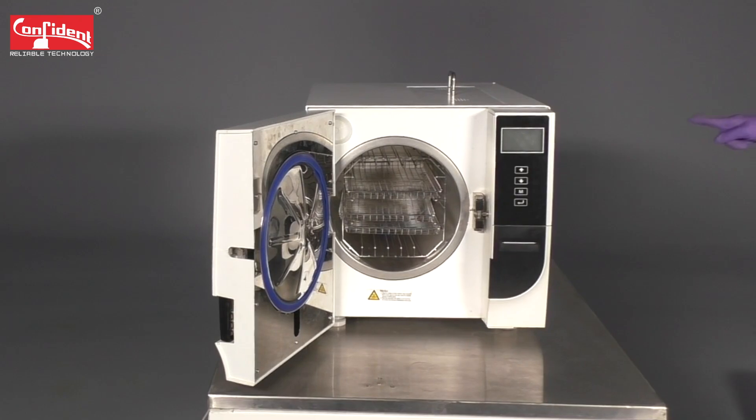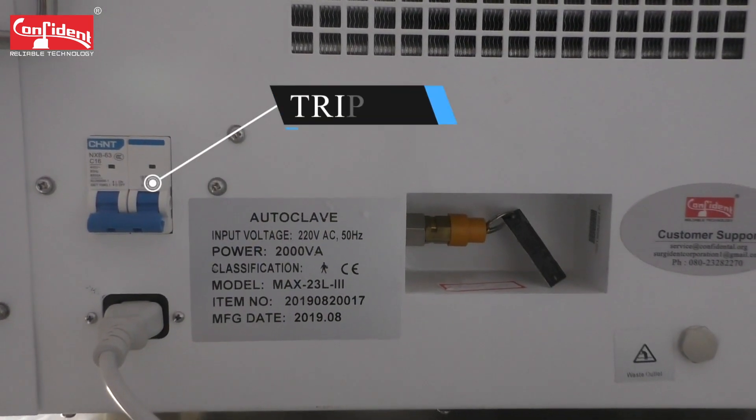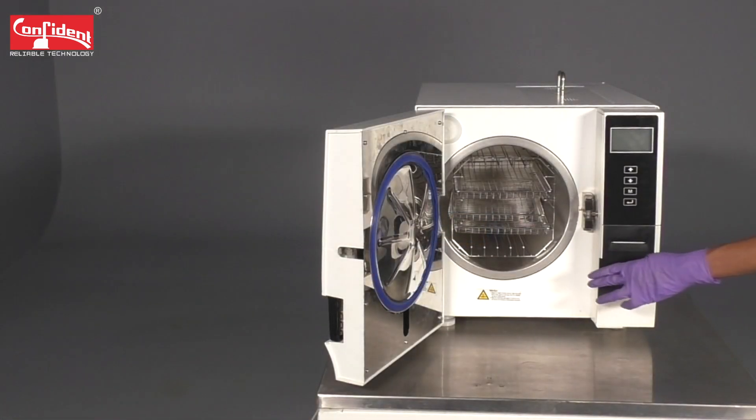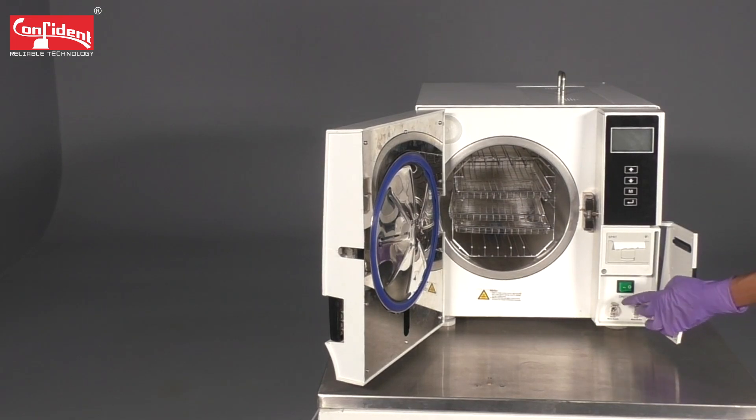Now switch on the device using the tripper which is located at the back of the device. To switch on the display, open the panel and turn on the green switch.